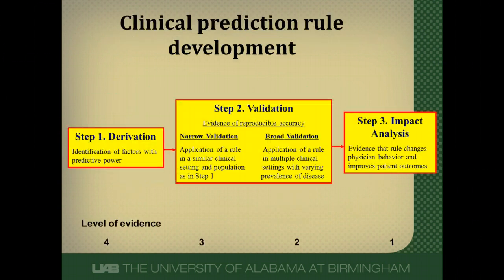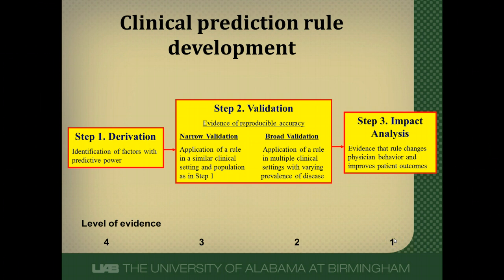Clinical prediction rules are generally developed in three steps: deriving the rule, validating it, and importantly, doing impact analysis. The level of evidence referenced here indicates that a lower level of evidence number actually represents better evidence supporting that clinical prediction rule — something you may encounter when reading papers or evidence-based textbooks like DynaMed or UpToDate.